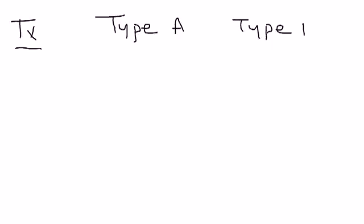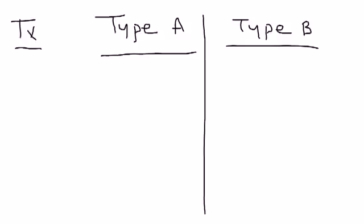So now we'll get into the treatment. Like I had mentioned previously, there's two types of aortic dissection, type A and type B. How you treat them depends on which type.